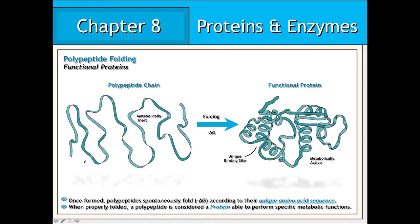Once established, a polypeptide chain can begin to fold spontaneously according to its unique amino acid sequence. This reaction is thermodynamically favorable as evidenced by its overall negative ΔG. Once properly folded, a polypeptide is now considered a fully functional and metabolically active protein. The specific folding of the polypeptide chain establishes an overall three-dimensional shape, which gives rise to unique binding sites that enable the protein to recognize, bind to, and interact with other molecules.